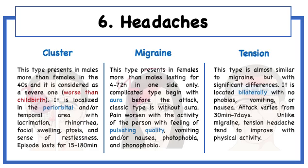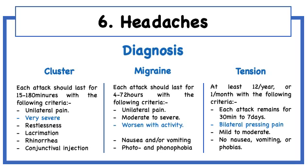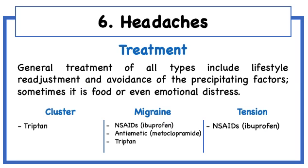Third, tension headache is the lowest in intensity but could last longer than the other types. Some variations between tension and migraine must be appreciated. In diagnosis, each type has its own criteria depending on the intensity, localization, duration, frequency, and most importantly the accompanied features. Regarding treatment, all types share the same general approach such as lifestyle readjustment; however, the special treatment depends on severity. Severe types are treated with triptans, while mild to moderate types are treated with non-steroidal anti-inflammatory drugs.